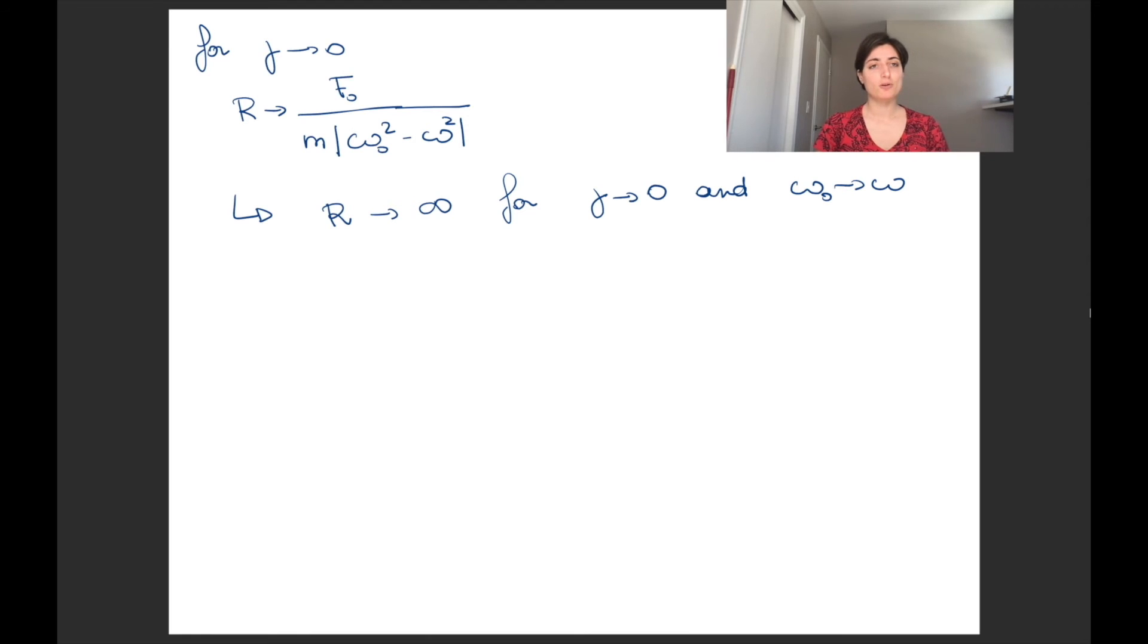Coming back to the formulas, for gamma tending to zero, we have that R tends to f0 divided by m times the absolute value of the difference between omega_naught^2 and omega^2. So if you're letting gamma going to zero and omega_naught and omega getting closer and closer, you have that the resonance tends to infinity.